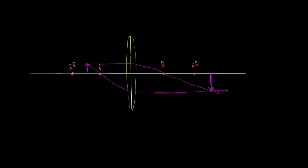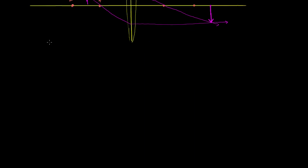This is really the reverse of the first example. In the first example, the object was large and more than two focal lengths away, and the image was closer in. Now the object is here between one and two focal lengths, and the image is on the other side further out — it's just the other side of that first example.